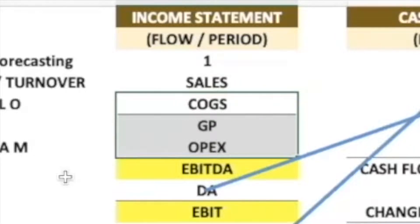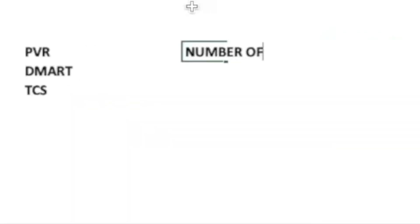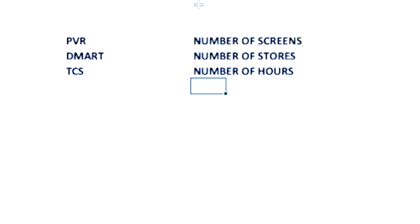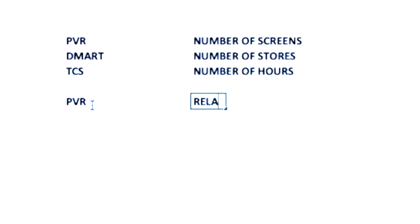If my sales are going to increase, my cost drivers will increase as well. If I open one more store, raw material costs will increase, operating expenses will increase — salaries, electricity costs, and so on. These costs are related to the number of stores or to sales. The revenue driver for PVR is the number of screens; for DMART it is the number of stores; and for TCS it will be the number of employees.